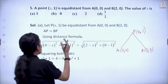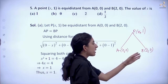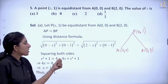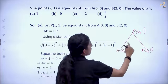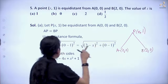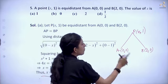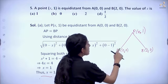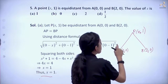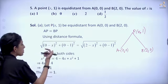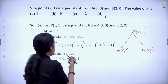So by using the distance formula, let us find out the distances AP and BP and then equate them to find the value of x. AP equals the square root of (0 minus x) squared plus (0 minus 1) squared, and this is equal to the square root of (2 minus x) squared plus (0 minus 1) squared.